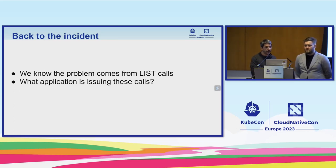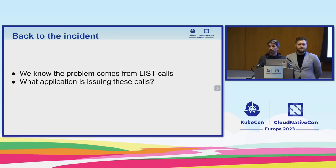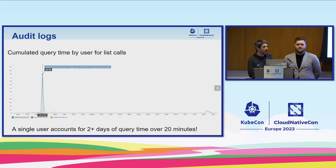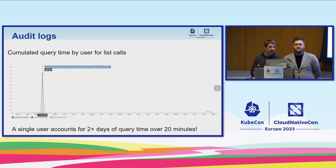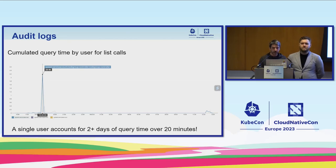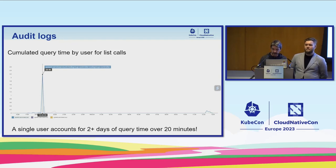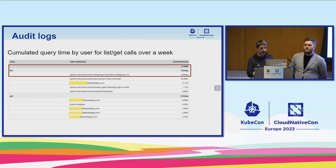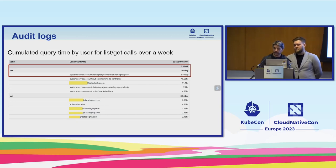Getting back to our incident: we knew the problem was coming from list calls. The next step was to understand which application was making them. On our cluster, we use audit logs extensively to know what's happening. Audit logs can show all queries and also query time. Looking at aggregated query time per user for list calls, we could see a single user accounting for more than 20 minutes of processing over a short window. Over a week, a single service account was responsible for almost three days of processing. That service account was called 'node group controller.'